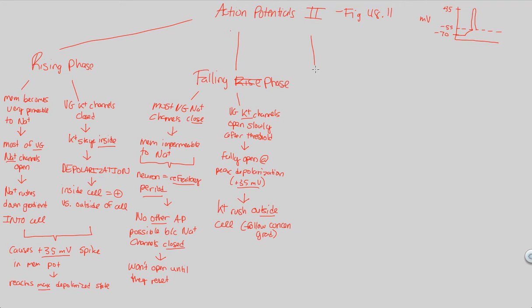It's going to fall to a point known as undershoot. The action potential will undershoot. This is the third sort of step.